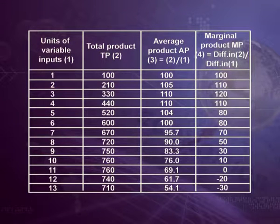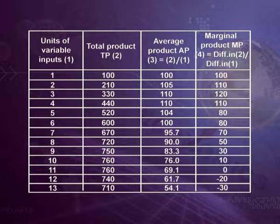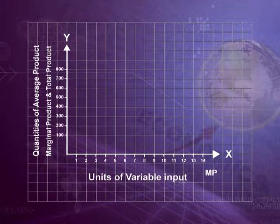There are four columns. First column is for units of variable factor, that is units of labour, which are given from 1 to 13. Second column is for total product produced by labour. Third column is for average product — average product equals total product divided by number of variable input, that is labour. Fourth column is for marginal product — marginal product equals difference in total product upon difference in quantity of variable factor. On the x-axis we take units of variable factor and on the y-axis quantities of total product, average product, and marginal product.